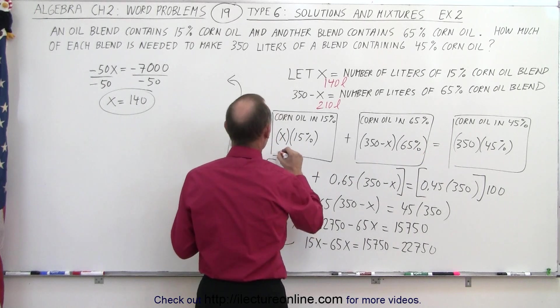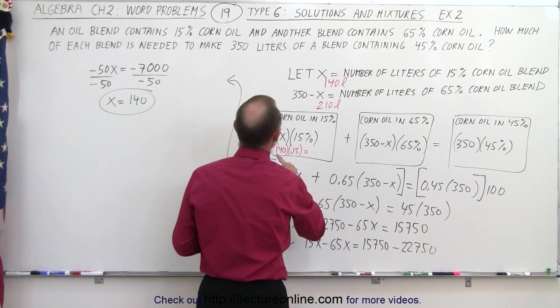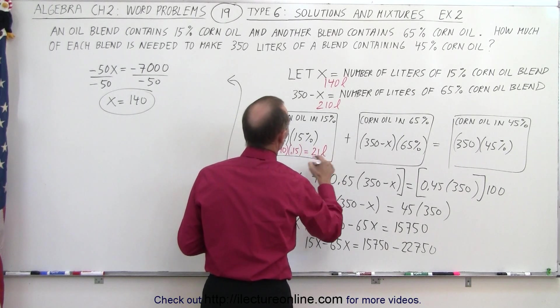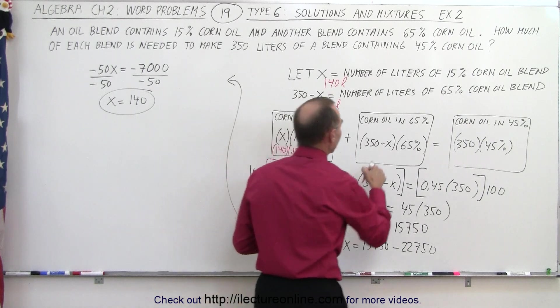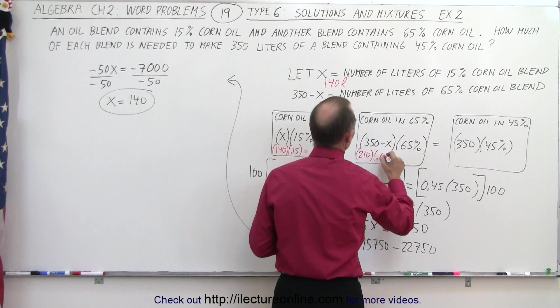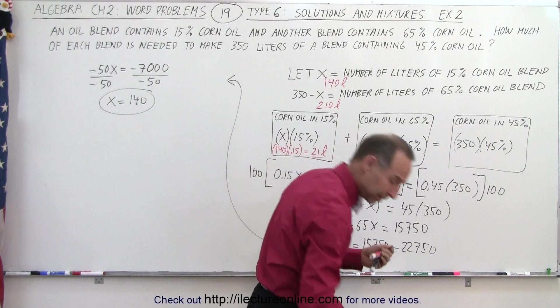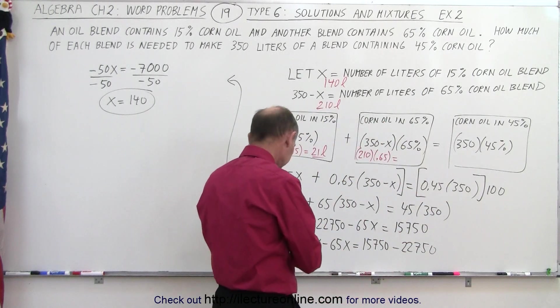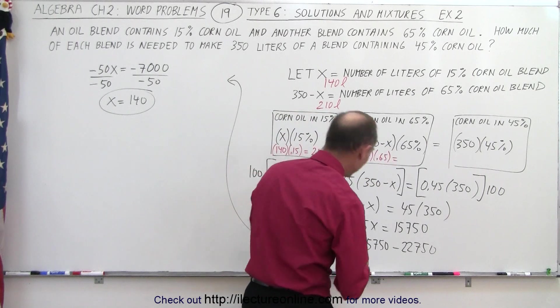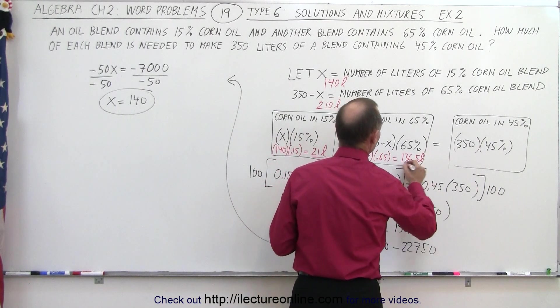So we have 140 multiplied by 0.15, which would be equal to 21 liters of corn oil in this blend. Here we end up with 210 multiplied by 0.65, that would be equal to, let's grab a calculator real quick, 210 times 0.65, that's 136.5 liters in this blend.